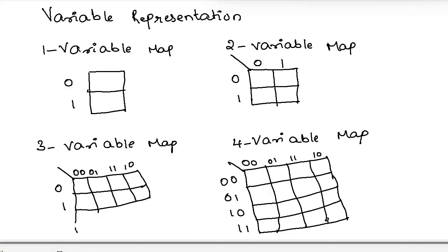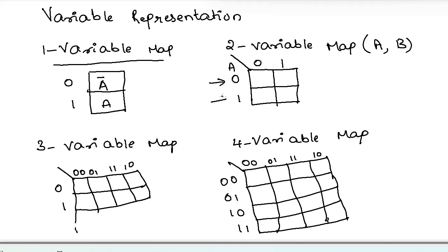Now let's see the variable representation. In a one-variable map, one cell is the A-bar cell and the other is the A cell. In the two-variable map, two variables are taken as A and B. The rows indicate the A variable and the columns indicate the B variable. The first cell is called A-bar B-bar, the second cell is A-bar B, the third cell is A B-bar, and the fourth cell is A B. Zero indicates complement form and one indicates normal form.